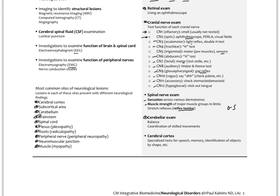To check the cerebellum, we check balance — have the patient walk and maybe close their eyes while walking. Be sure to stay close if you suspect a balance problem so the patient doesn't fall. We check coordinated skills like touching their finger to the tip of their nose quickly back and forth, or moving their finger from their nose to your finger. To check the cortex, we look for higher functions: speech, memory, and identification of objects by shape. This entire neuro exam takes just a few minutes when you're skilled at it and gives really valuable information for identifying neurological lesions.